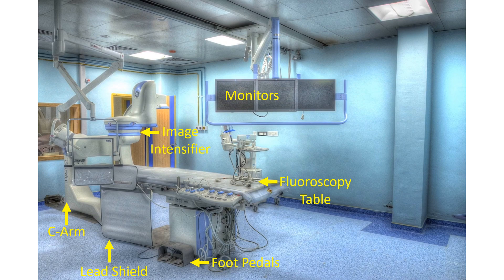The X-ray tube is operated using foot pedals by the operator. The X-ray tube and image intensifier are attached to a C-arm gantry, which can be rotated in two planes to produce various angulated views, typically operated by the assisting cath lab technician.